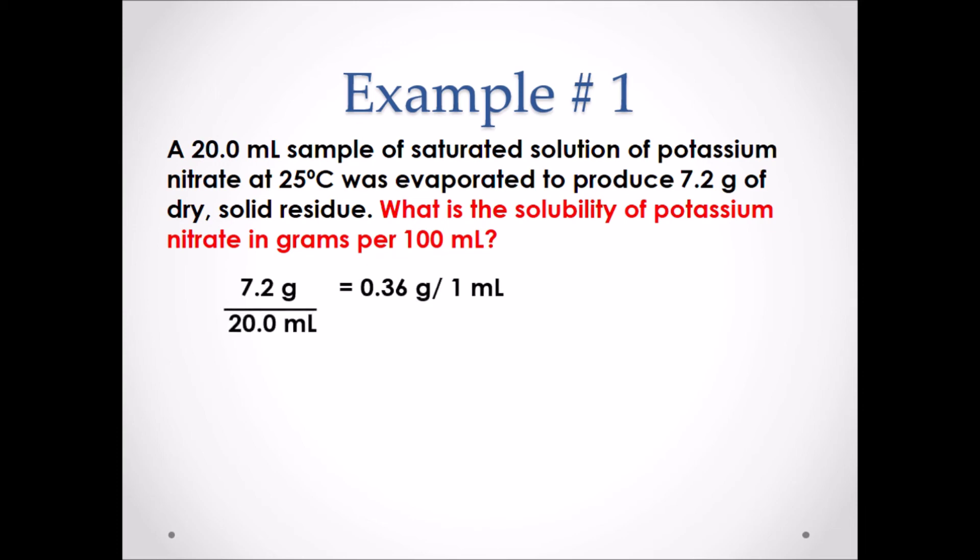We know that 7.2 grams of potassium nitrate can be dissolved in 20 mL of solution, which equals 0.36 grams can be dissolved per 1 mL of solution. We can then simply times this value by 100 to get the solubility of potassium nitrate, which is 36 grams per 100 mL at 25 degrees Celsius.